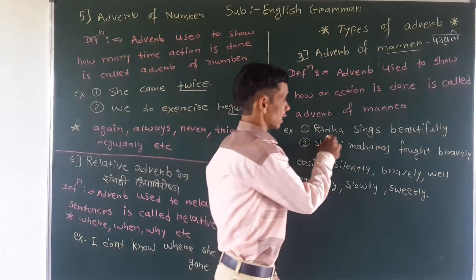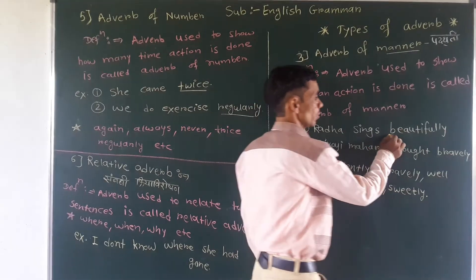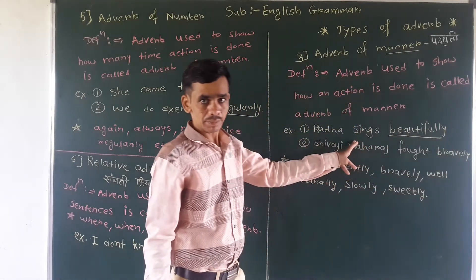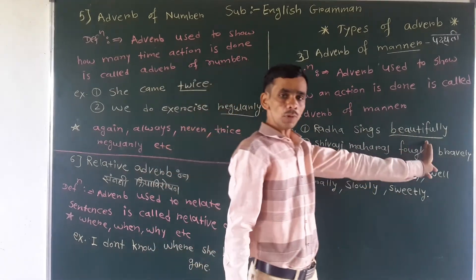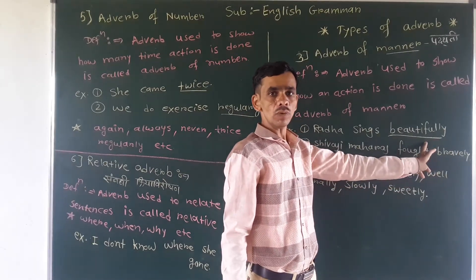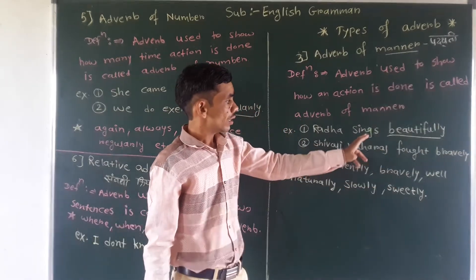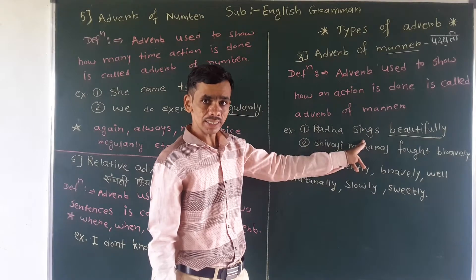For example, Vada sings beautifully. So Vada sing kari, katab gana kari. But how? Beautifully. So this word 'beautifully' shows how she sings.